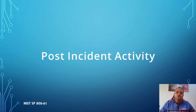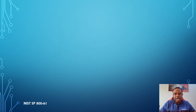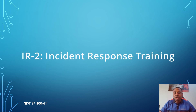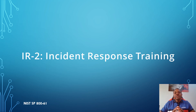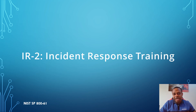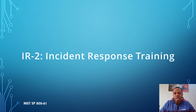We'll be looking at some of the controls that fall under the incident response control family. IR2 is incident response training. IR2 focuses on ensuring that incident response training is provided, how often it is provided, and if a refresher training has been provided. Evidence we can request to satisfy IR2 includes incident response training materials and attendee records.